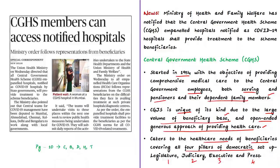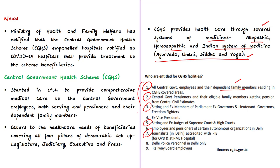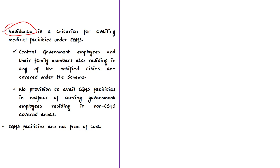The scheme is unique because of its large beneficiary base and open-ended generous approach to healthcare. It generally captures the healthcare needs of eligible beneficiaries from the four pillars of India's democratic setup: legislature, judiciary, executive, and press. Presently around 35 lakh beneficiaries are covered in around 71 cities across India. The scheme provides healthcare through several systems of medicine, including allopathy, homeopathy, Ayurveda, Unani, Siddha, and Yoga. Residence in a CGHS-covered city is a key eligibility criterion.